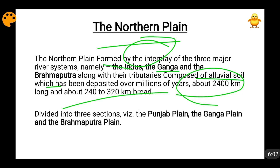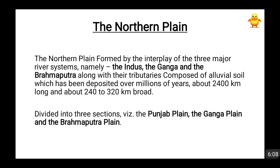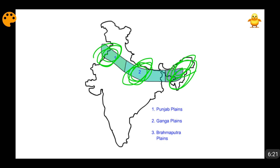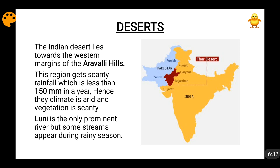There are three main sections: the Punjab plain, the Ganga plain, and the Brahmaputra plain. The northern plains are mainly comprised of alluvial soil and are a very fertile area. However, the fertility of this region is slowly decreasing because of unsustainable agricultural practices. The present government is trying to arrest those unsustainable agricultural practices.